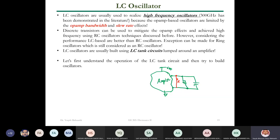The LC tank or LC oscillators can be used where we apply some current to the LC tank, and that current will refresh it. In practice, the LC tank is not ideal — it has some resistance, either series or parallel, that causes the oscillation to decay. We need an amplifier to refresh the circuit and make it resonate at the LC tank resonance value.